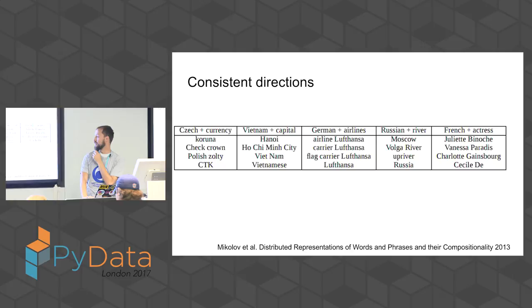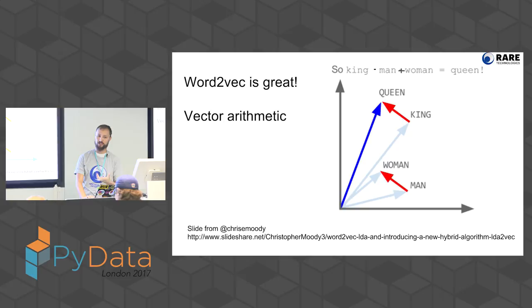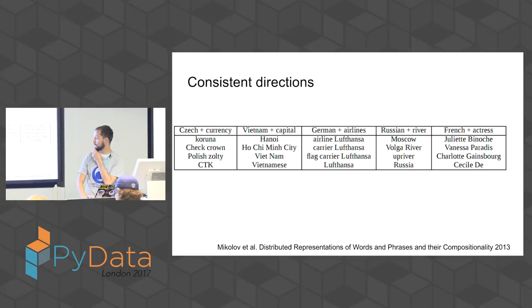It's not exactly explained what is the math behind the structure that's produced. It's more obvious in GloVe than in here — a different algorithm.